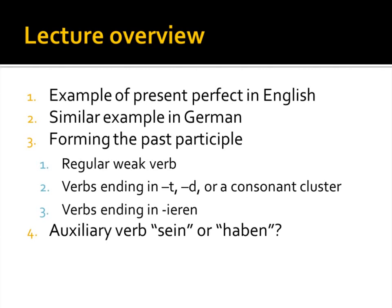Finally, we're going to take a look at the auxiliary verbs, or helping verbs, of sein and haben — when do we use these in conjunction with the past participle to form the present perfect tense?